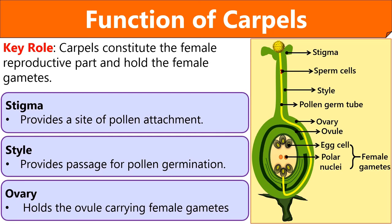So friends, we have discussed the function of all the floral components. But there are certain terms used to indicate the floral layers. Calyx indicates the layer of sepals. Corolla represents the layer of petals. Androecium indicates the male reproductive layer or stamen of a flower. And gynoecium indicates the female reproductive layer of a flower. Therefore we should not confuse these terms.